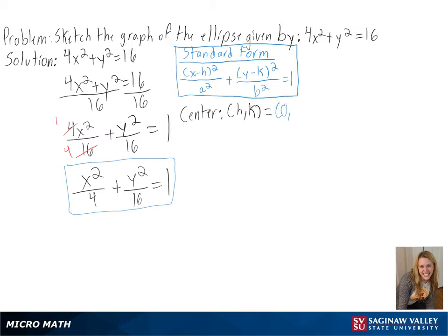Next we need to figure out a and b since they will determine our vertices. For a, we get 2, so we will be going left and right 2 units. And for b, we get 4, so we will be going up and down 4 units. And now we can sketch our ellipse.